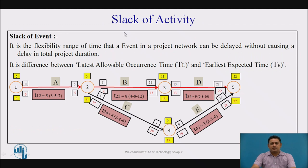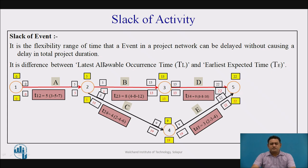This is the slack of an activity. As seen in CPM there is a float; in PERT there is a slack. Slack is the flexible range of time that an event in a project network can be delayed without affecting the overall project duration. The slack value is obtained by the difference between the latest allowable occurrence time and the earliest expected time.